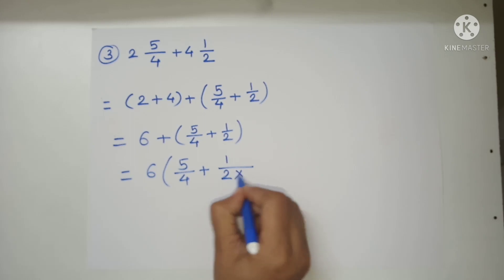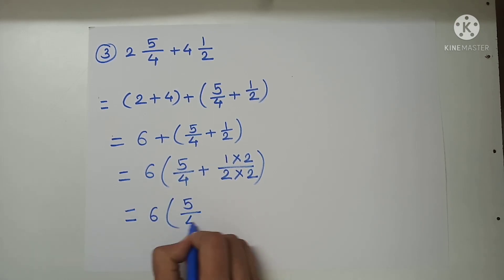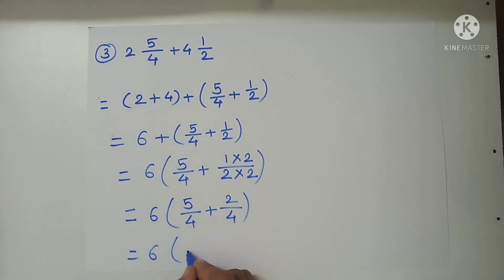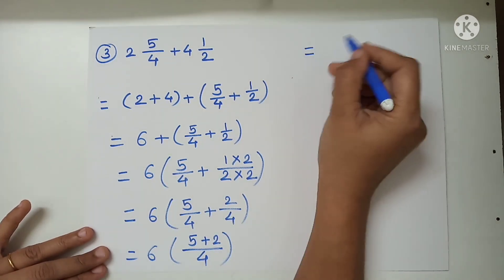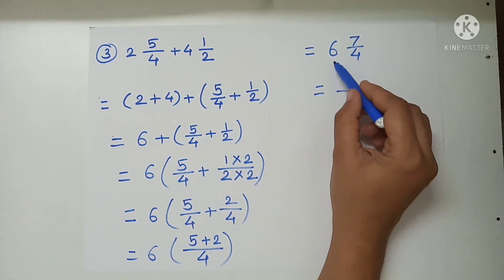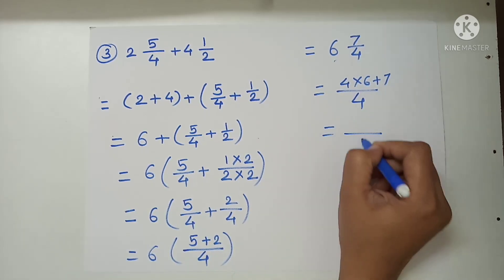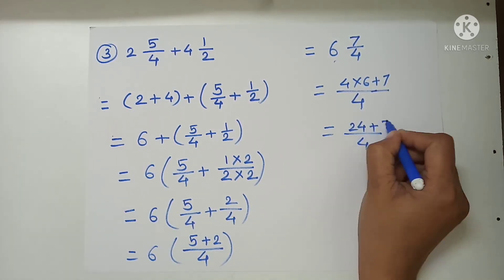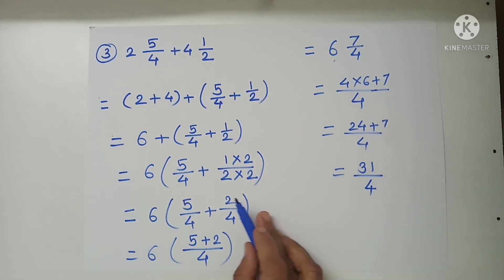Multiplying 1 upon 2 by 2 over 2, we get 2 upon 4. So we have 6 plus 2 upon 4 plus 2 upon 4. The denominators are now the same, so 5 plus 2 upon 4 gives 7 upon 4. Combined: 6 and 7 upon 4. Converting: 4 multiplied by 6 plus 7, with 4 as denominator, gives 24 plus 7, that is 31 upon 4.